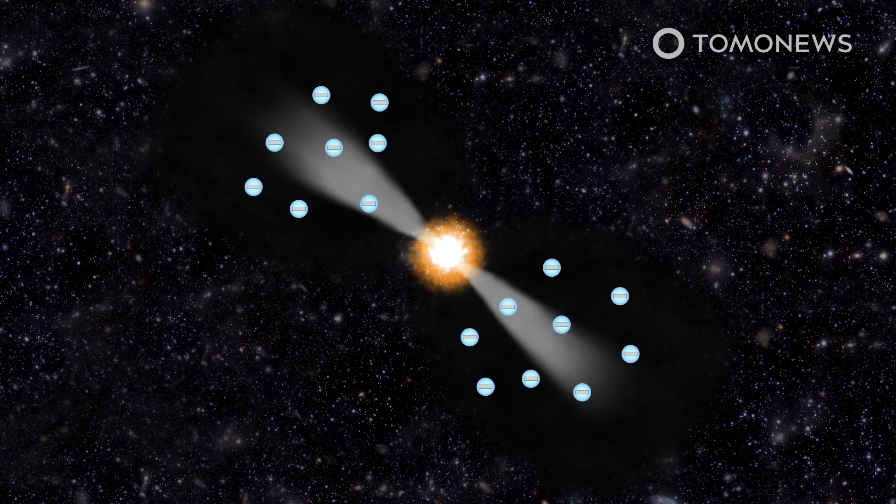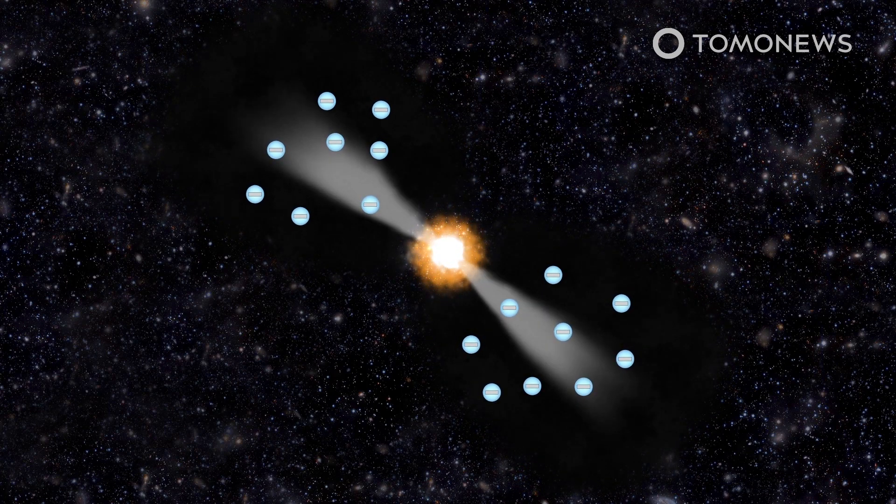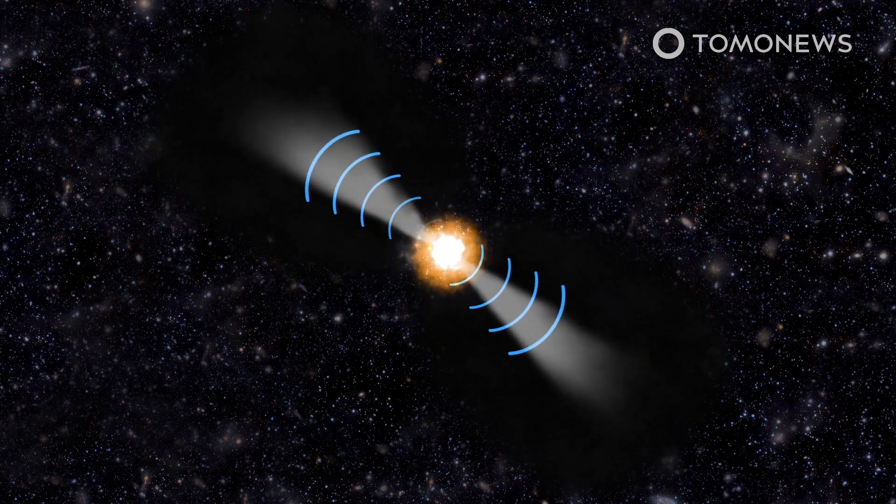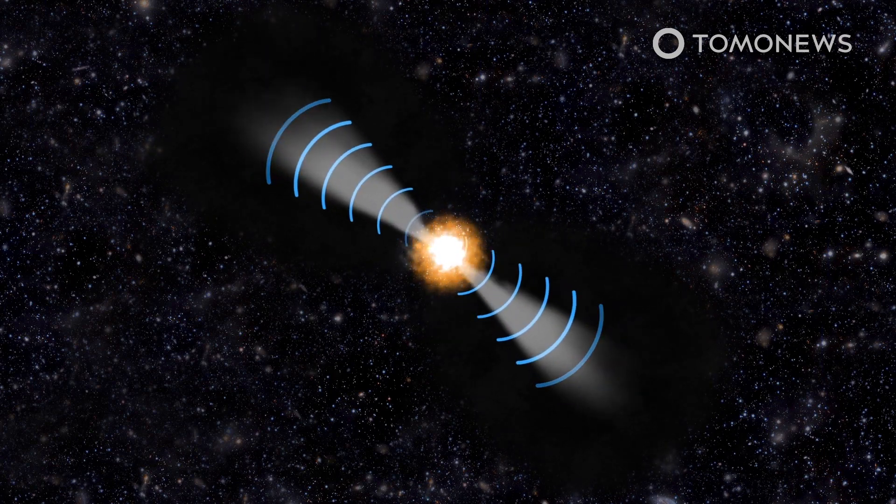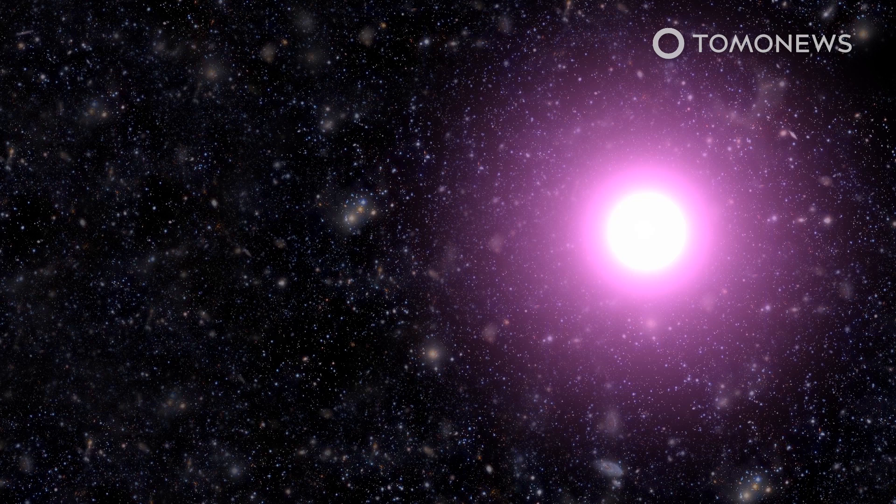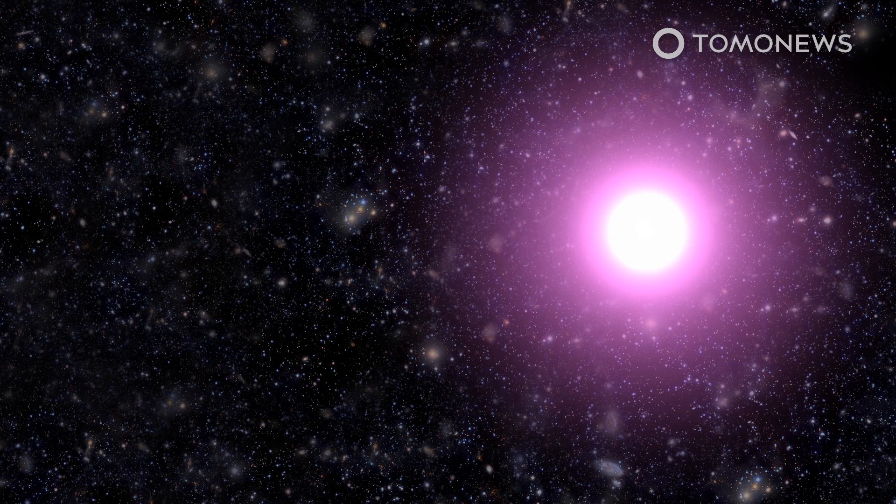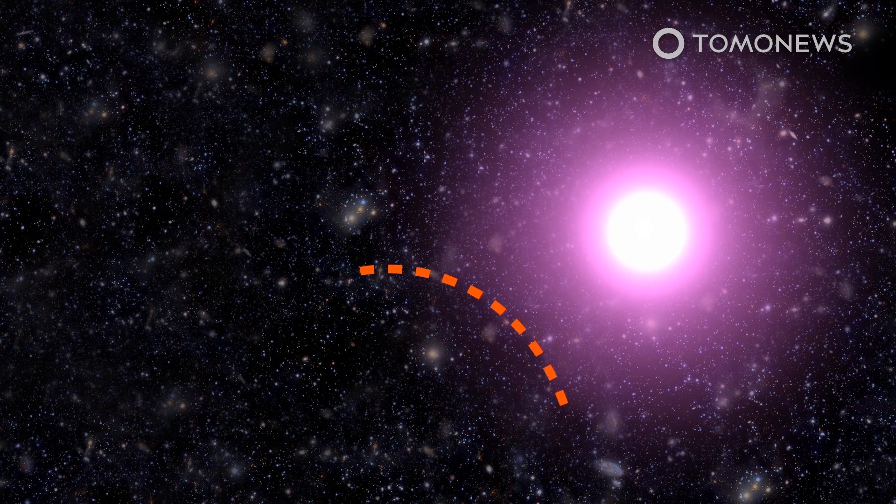The black hole created jets that accelerated electrons to nearly the speed of light, which resulted in radio waves that filled the cavity left in the eruption's wake. BBC reports astronomers first noticed something strange with the cluster's central galaxy when NASA's Chandra X-ray Observatory Telescope in 2016 saw the unusual curve of its edge.